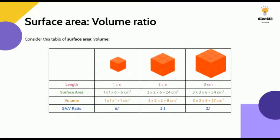Let's consider this table — we've got three different cubes: the first is one centimeter, the next is two centimeters, and three centimeters. If we work out the ratio, the largest ratio belongs to the smallest cube, and the larger the ratio, the quicker the rate of diffusion. This is why unicellular organisms only need to rely on diffusion, because their small size means they have a better chance of diffusing substances quickly.